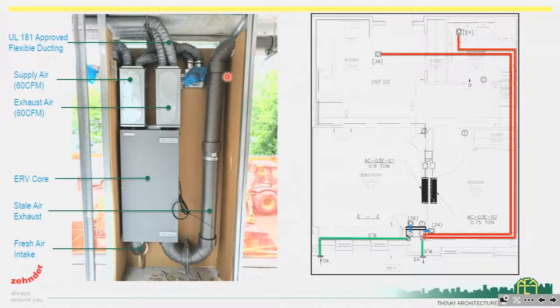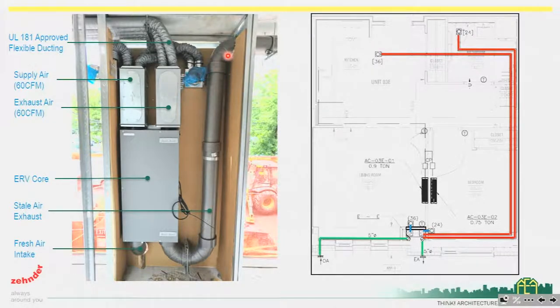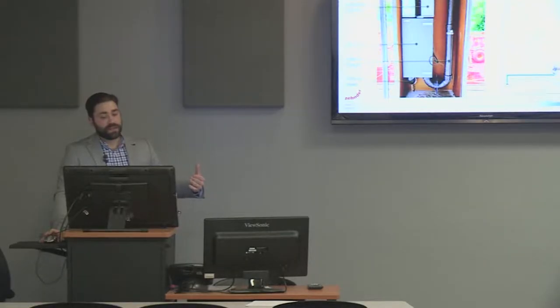The idea is we want to minimize the amount of duct runs to the outdoors, because from an extension-of-the-envelope perspective, these ducts going to the outside — both exhausting stale air and providing fresh air — are extensions of the envelope. They need to perform as well as the envelope itself in order for us to not have heat gain during the summertime or heat loss during the wintertime, since we're going to have very cold or very hot air inside these pipes as they operate continuously.